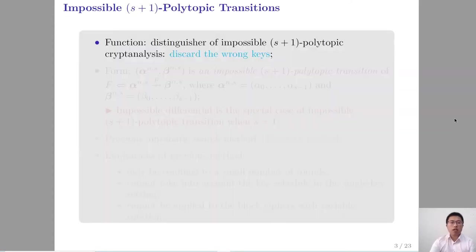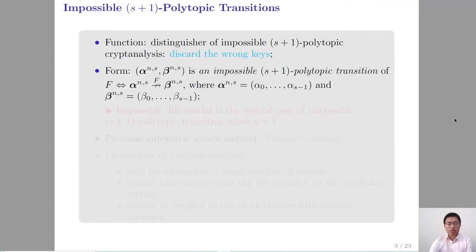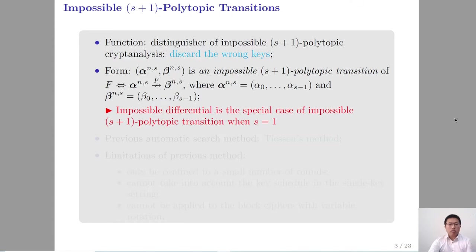In the distinguisher of impossible s-plus-1 polytopic transitions, usually a pair of input and output s-differences alpha-beta is called an impossible s-plus-1 polytopic transition of a function f. It means that, according to the propagation of the input s-difference alpha, the input s-difference alpha cannot propagate to the output s-difference beta. Note that an impossible differential is the special case of an impossible s-plus-1 polytopic transition when s equals 1.